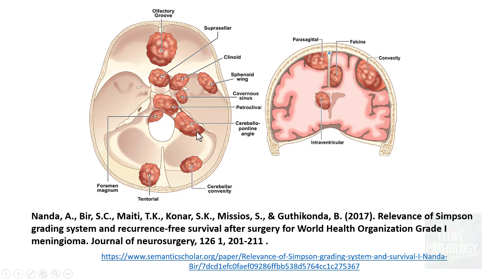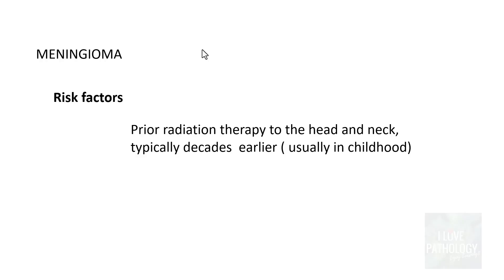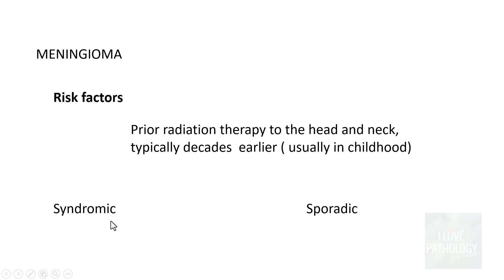The risk factors for development of Meningiomas include prior radiation therapy to the head and neck region, typically decades earlier, usually in childhood. People who are survivors of atomic bomb attacks also have an increased propensity for developing Meningiomas. Meningiomas can also be syndromic — for example, as part of neurofibromatosis 2 syndrome — or they can be sporadic.